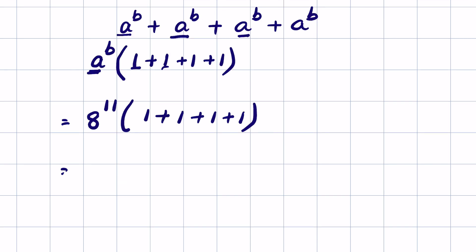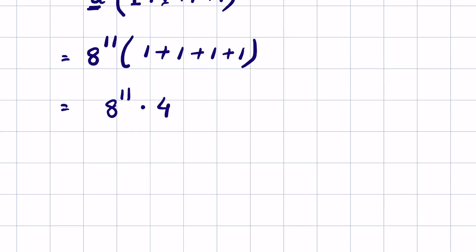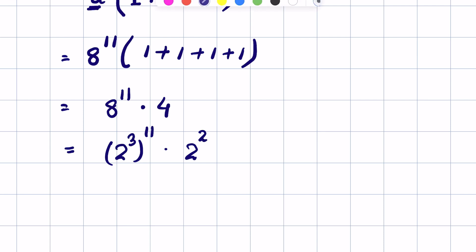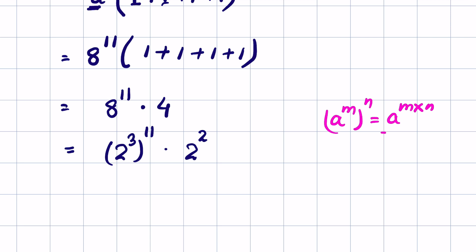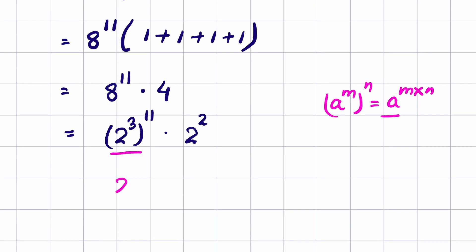This equals 8 raised to the power 11 times 4. Now we write 8 as 2 raised to the power 3, whole raised to the power 11, and 4 as 2 raised to the power 2. Using the identity (a raised to the power m) whole raised to the power n equals a raised to the power m times n, this becomes 2 raised to the power 33, times 2 raised to the power 2.